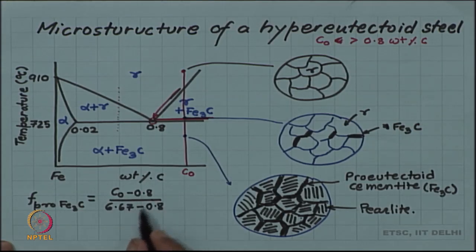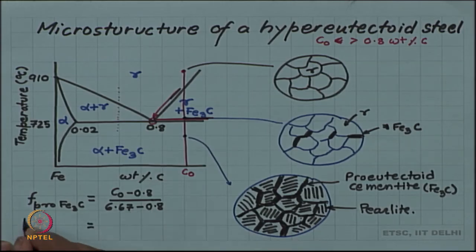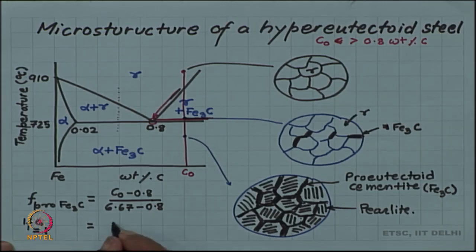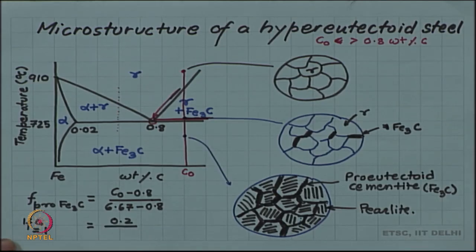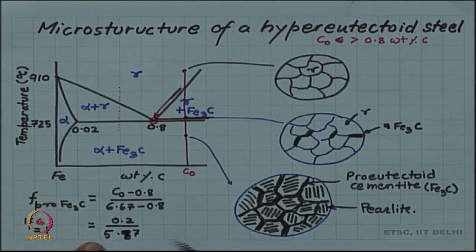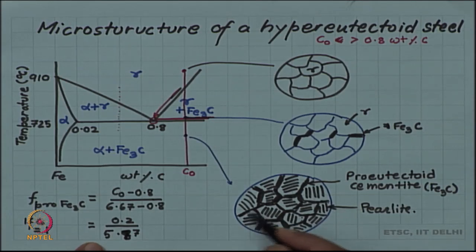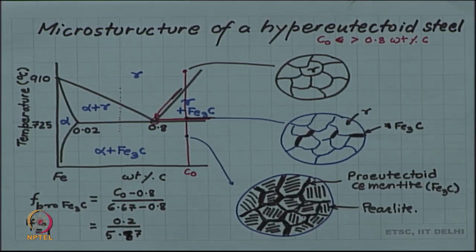The numerator is much smaller, you can see. If C naught is equal to let's say 1 for 1 percent, let us calculate. This will be 0.2 divided by 5.87, which will be a much smaller number. The fraction of cementite which will come out will not be too much. That is why they initially come on the grain boundary, so they appear to be as a network covering the grain boundaries.